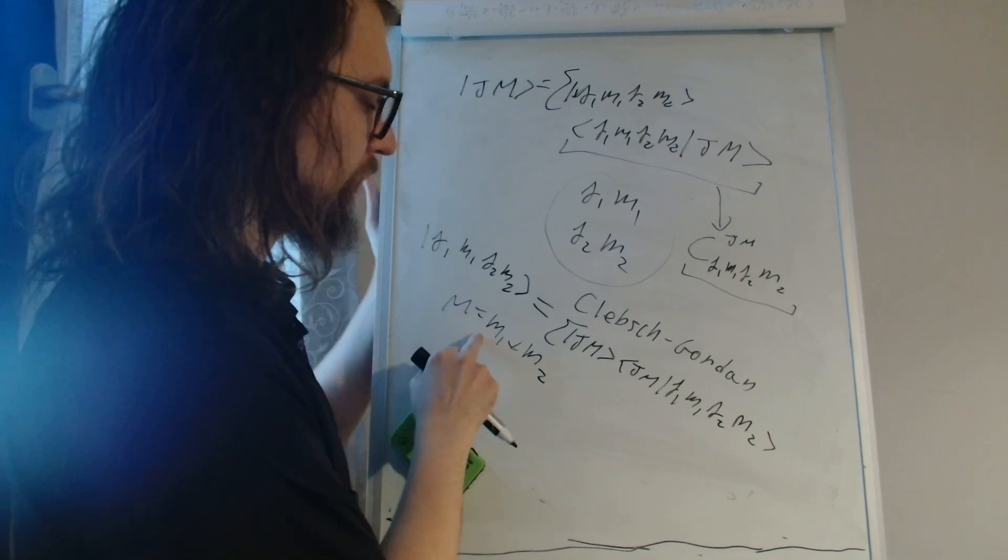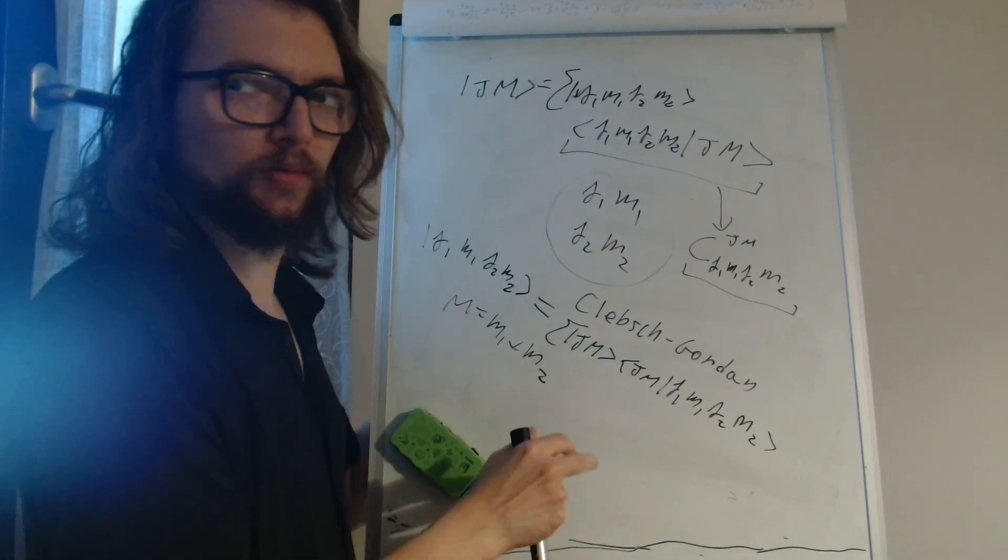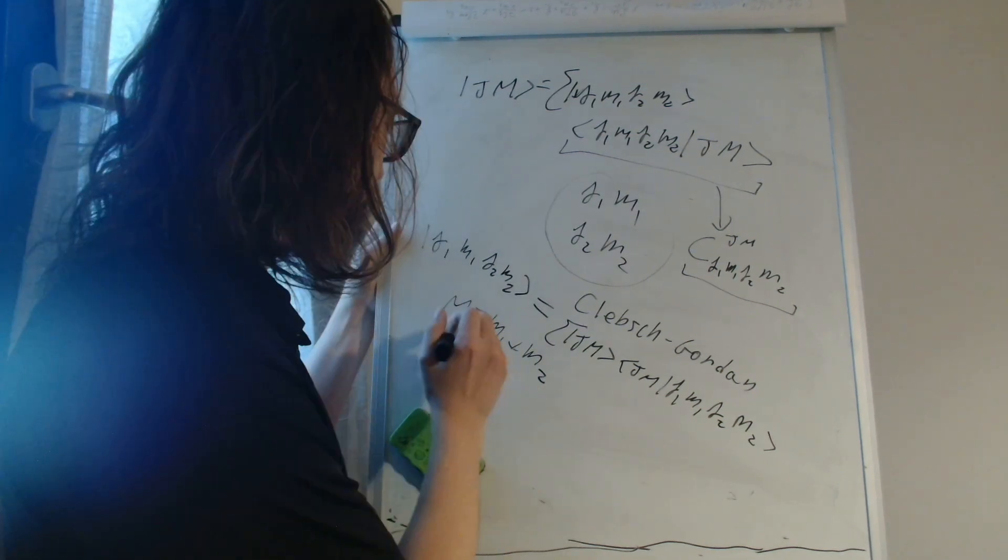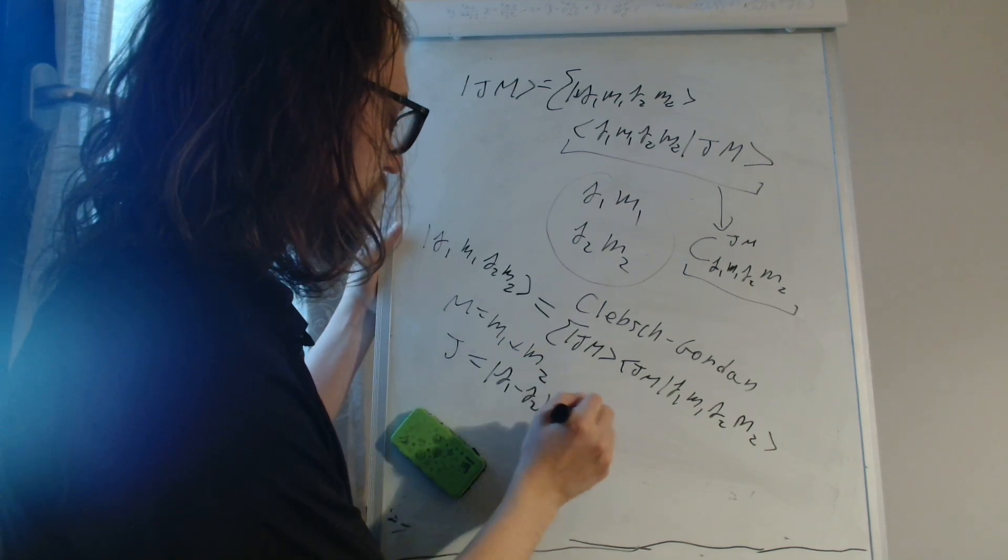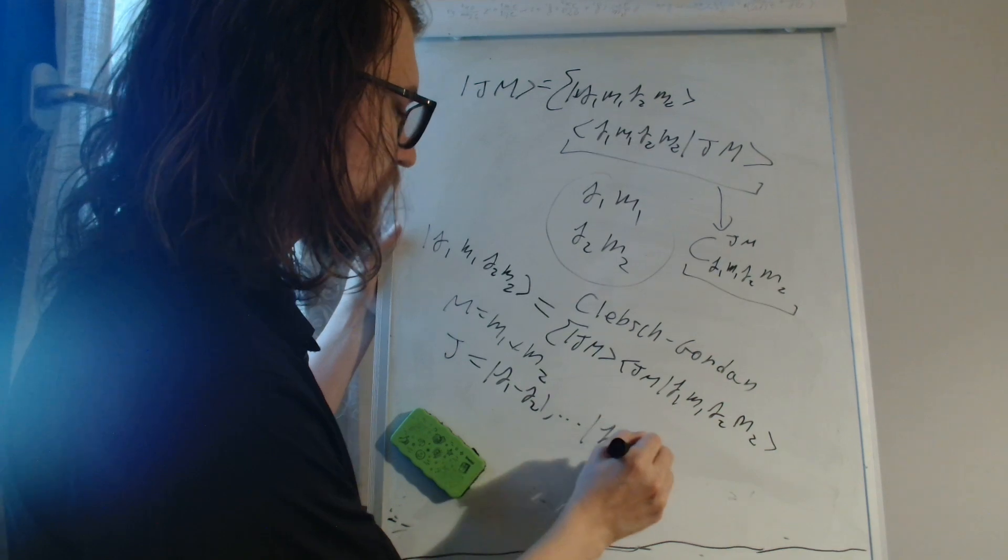If M is different from this, the coefficient will be 0. And J is between J1 minus J2 and J1 plus J2.